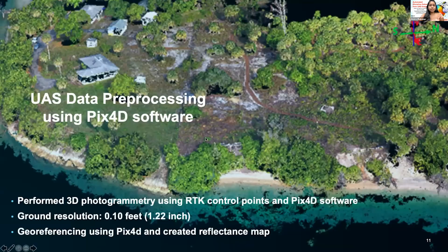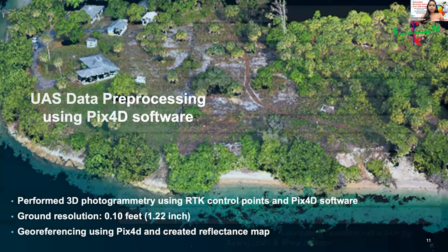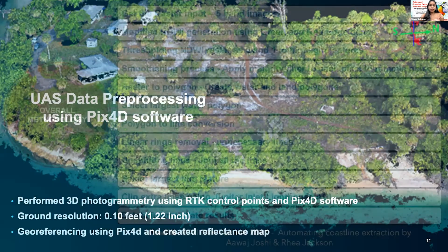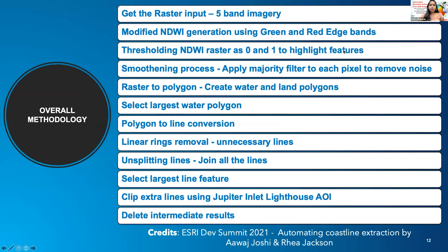The imagery acquired by the drone was initially processed in Pix4D Mapper to produce the 3D point cloud products, digital elevation models, and orthomosaic. This is the overall methodology that has been adapted for the research, and we can go through the result at each step in the coming slides.